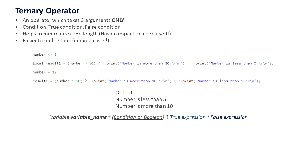We have a variable. The variable name equals the condition that we want to check, a question mark, what we want to execute if it's true, and what we want to do if it's false.